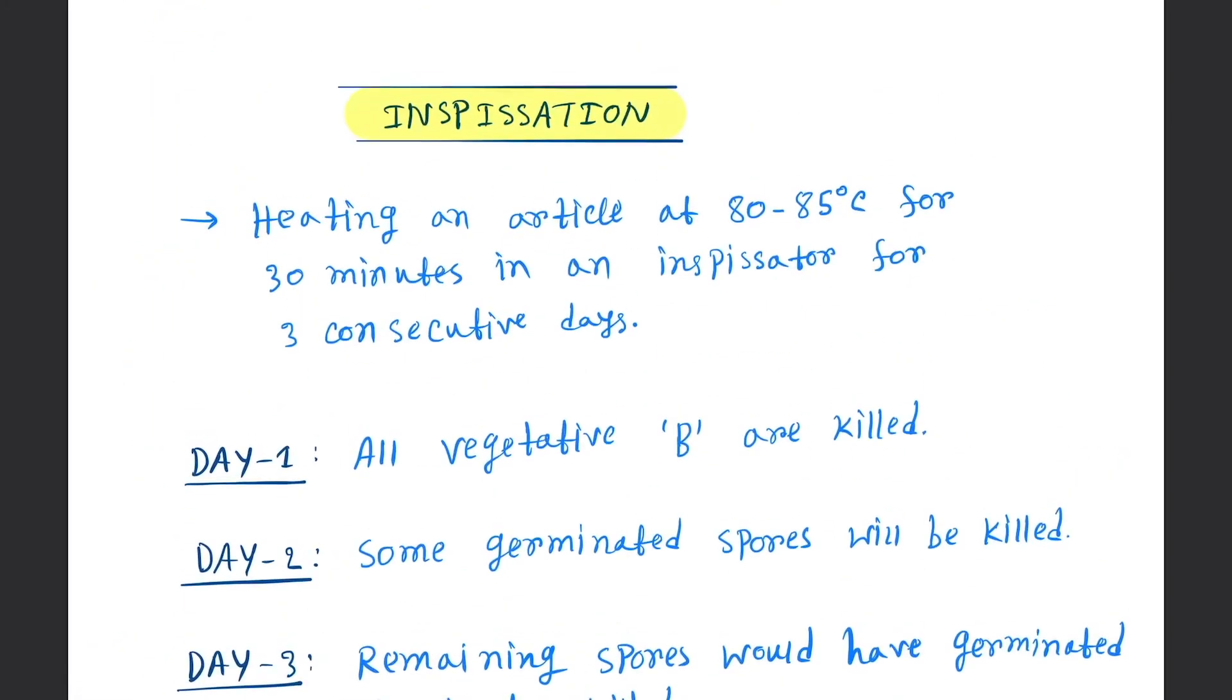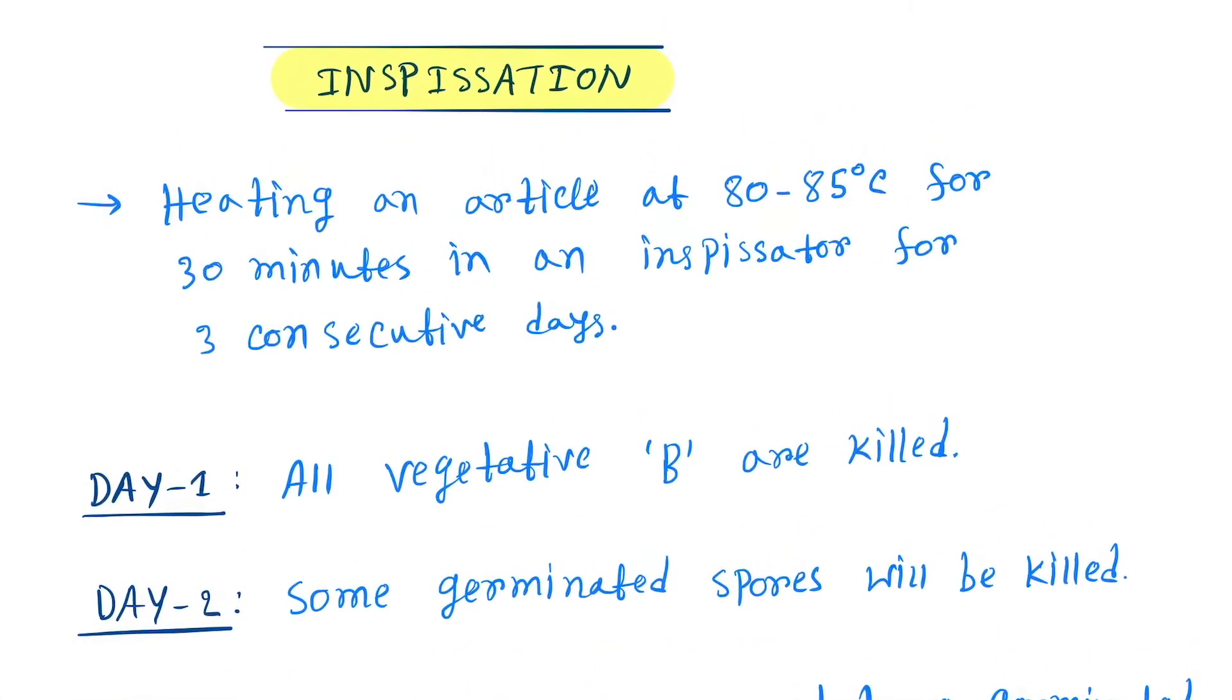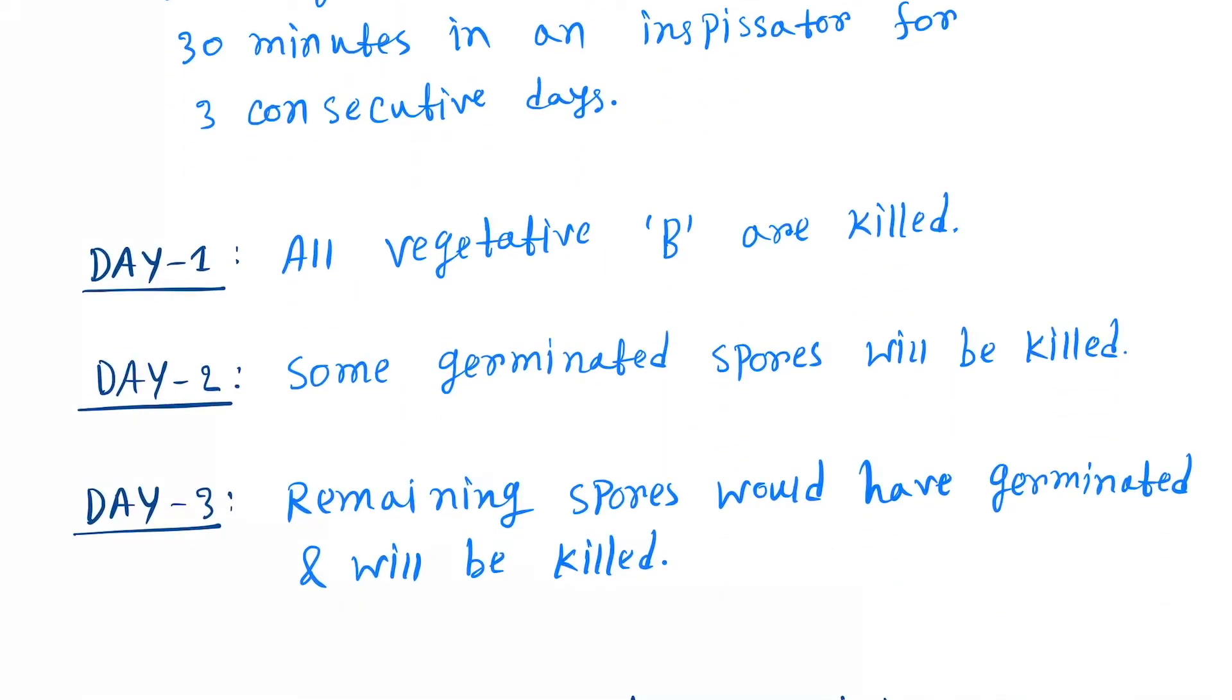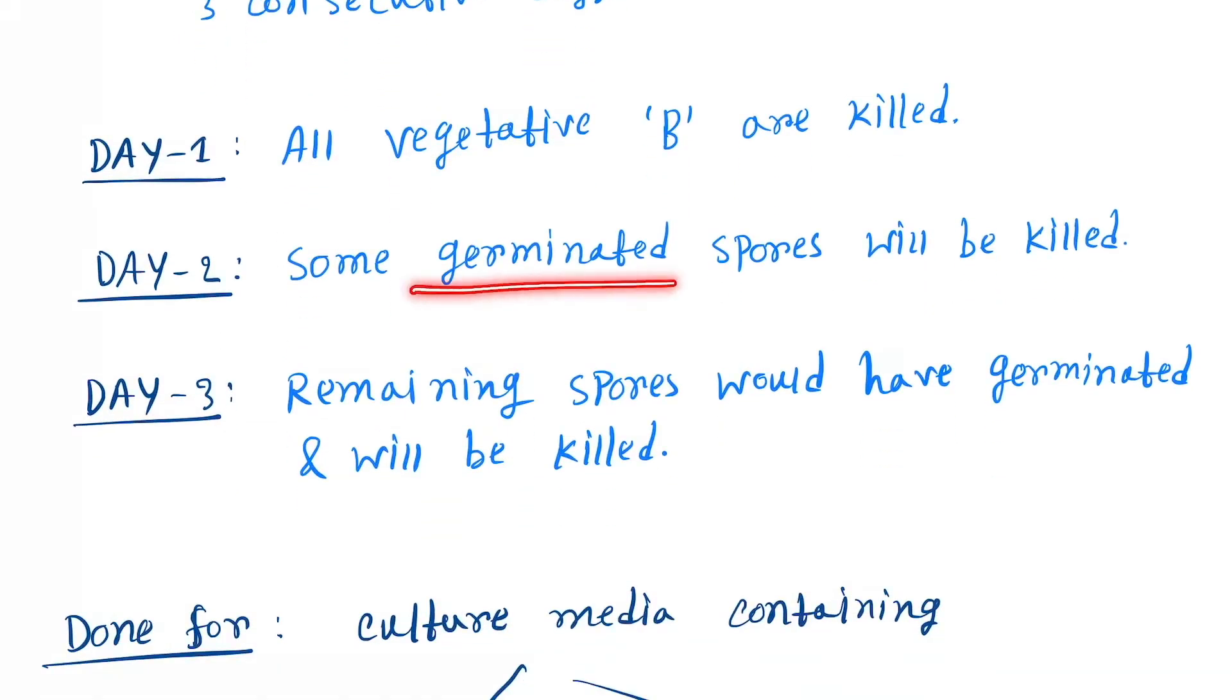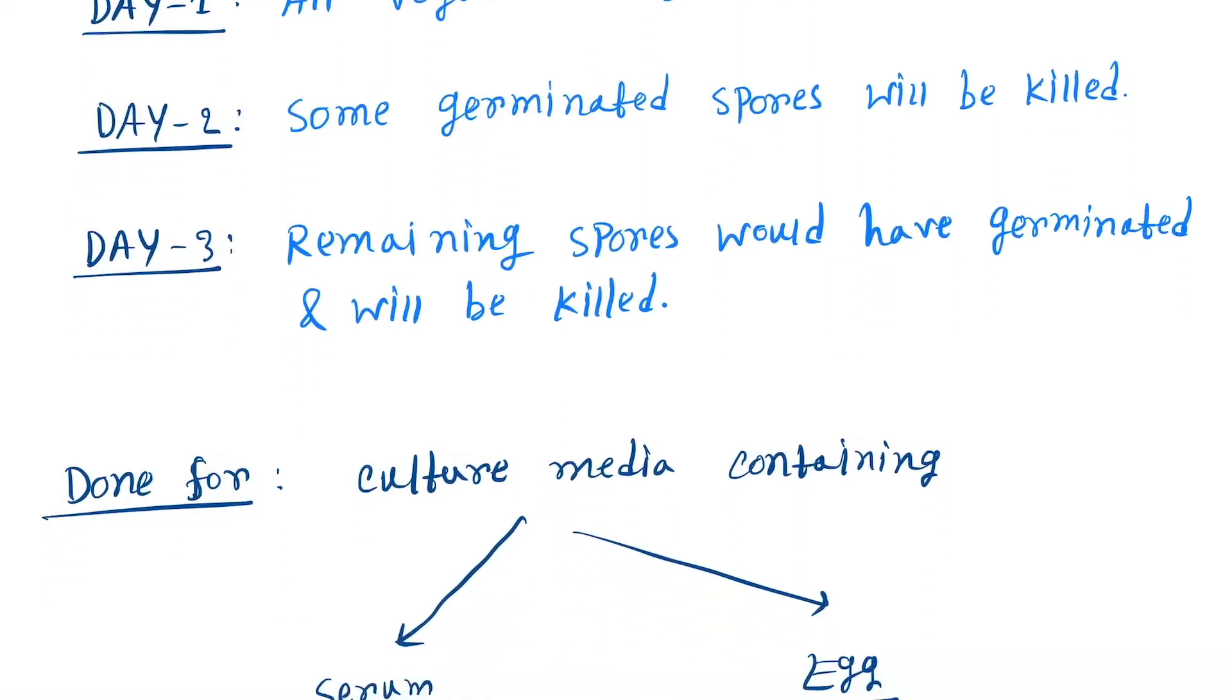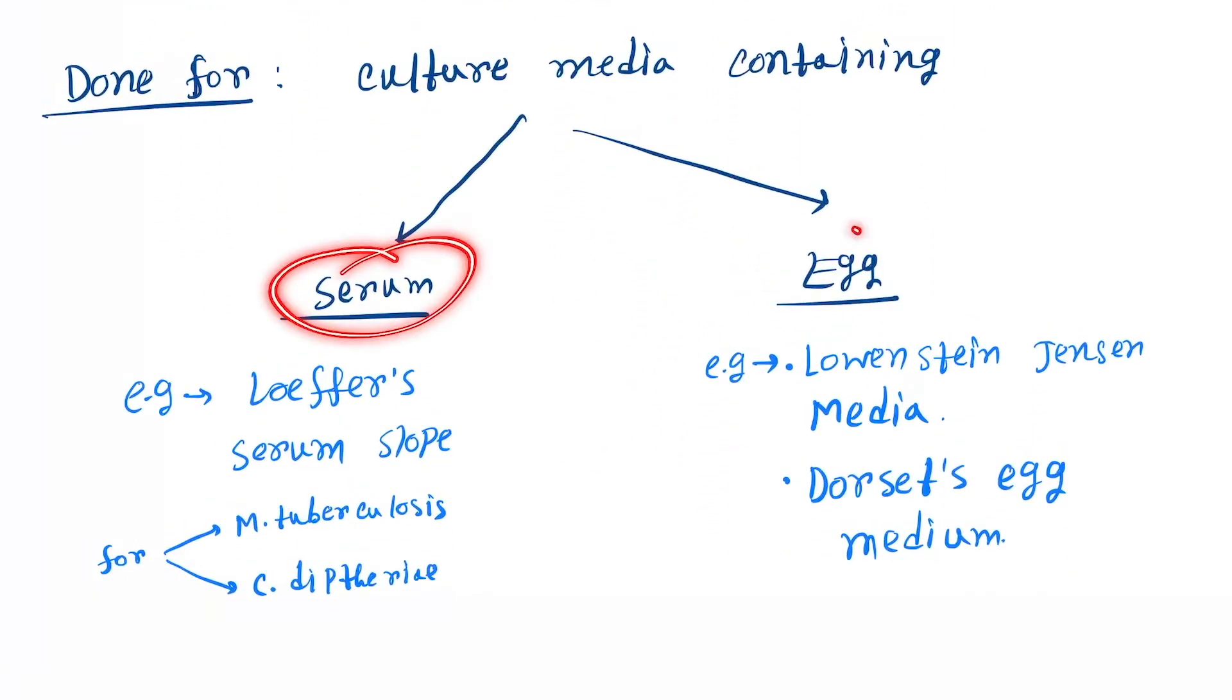Let's see inspissation in detail. Heating an article at 80 to 85 degrees Celsius for 30 minutes in an inspissator for three consecutive days. Day one: all vegetative bacteria are killed. Next: some germinated spores will be killed. Remaining spores would have germinated and will be killed. Done for culture media containing serum and egg. Serum-containing media like Loeffler's serum slope, and egg-containing is Lowenstein-Jensen media and Dorset egg medium.